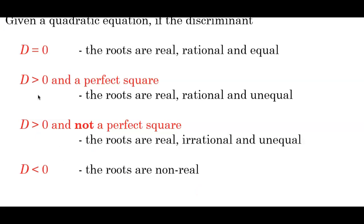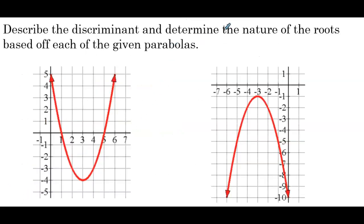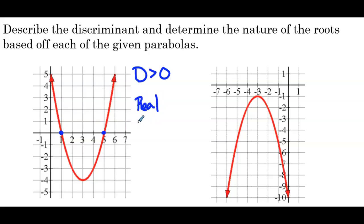Now let's look at a few examples where we use the discriminant to describe the nature of the roots from given parabolas. First, looking at the x-intercepts: there are two of them, so the discriminant is greater than 0. The x-intercepts are (1, 0) and (5, 0). The roots are real, rational, and unequal — 1 and 5 are rational numbers giving two separate x-intercepts.